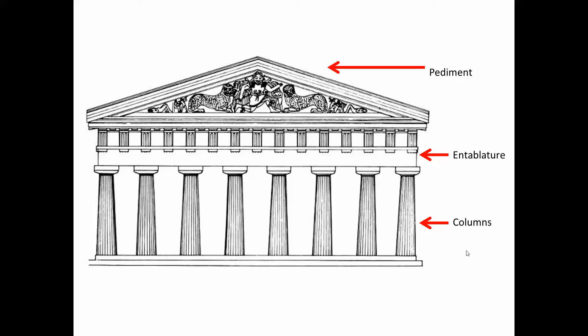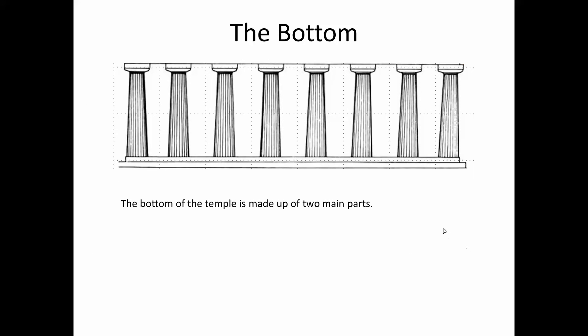So let's look at each of these areas in a little more detail starting from the bottom of the column. So the bottom of the column is made up of two parts. We have the stylobate here in red, and the column, this area in green, and that column is broken down even farther into the shaft, that's what this part is called, and the capital itself, the part on the top.